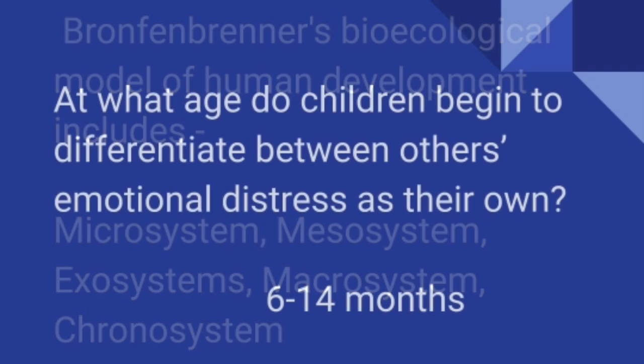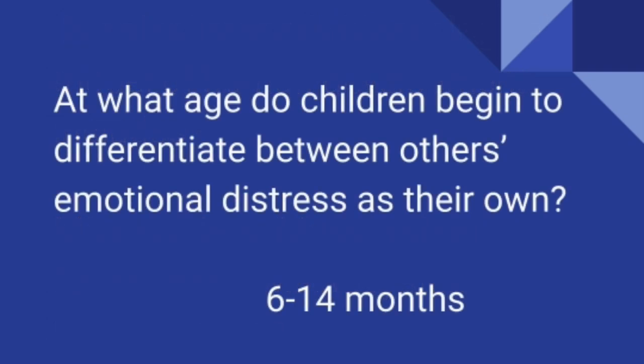At what age do children begin to differentiate between others' emotional distress as their own? The answer is 6 to 14 months.